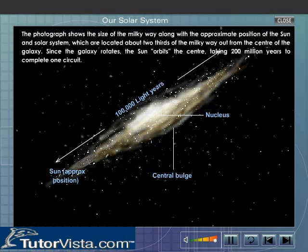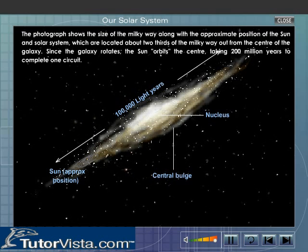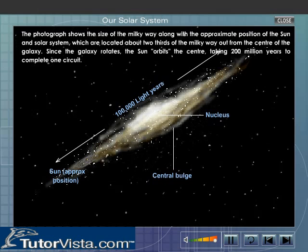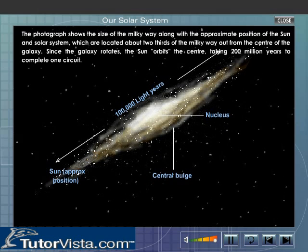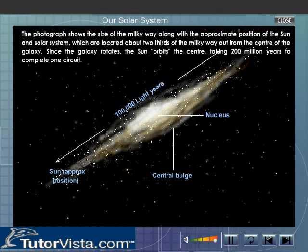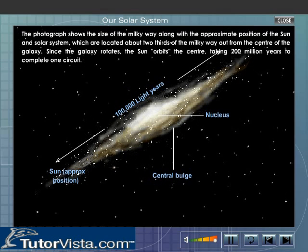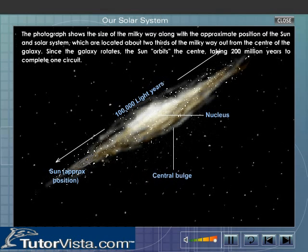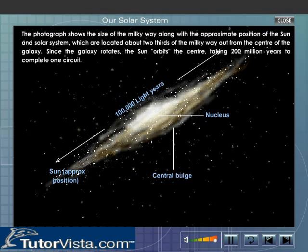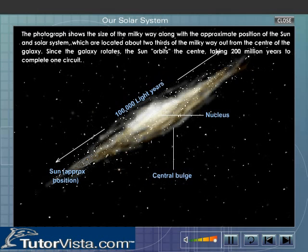The photograph shows the size of the Milky Way along with the approximate position of the Sun and Solar System, which are located about two-thirds of the Milky Way out from the centre of the galaxy. Since the galaxy rotates, the Sun orbits the centre, taking 200 million years to complete one circuit.